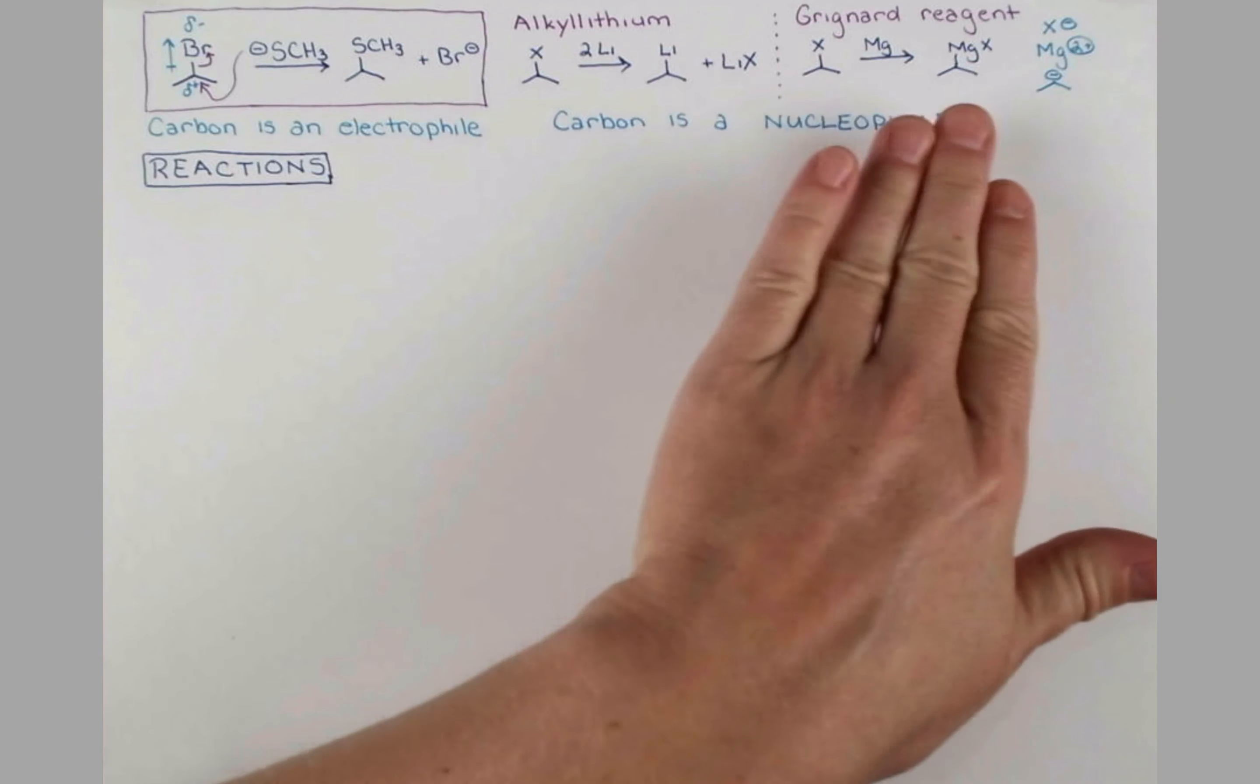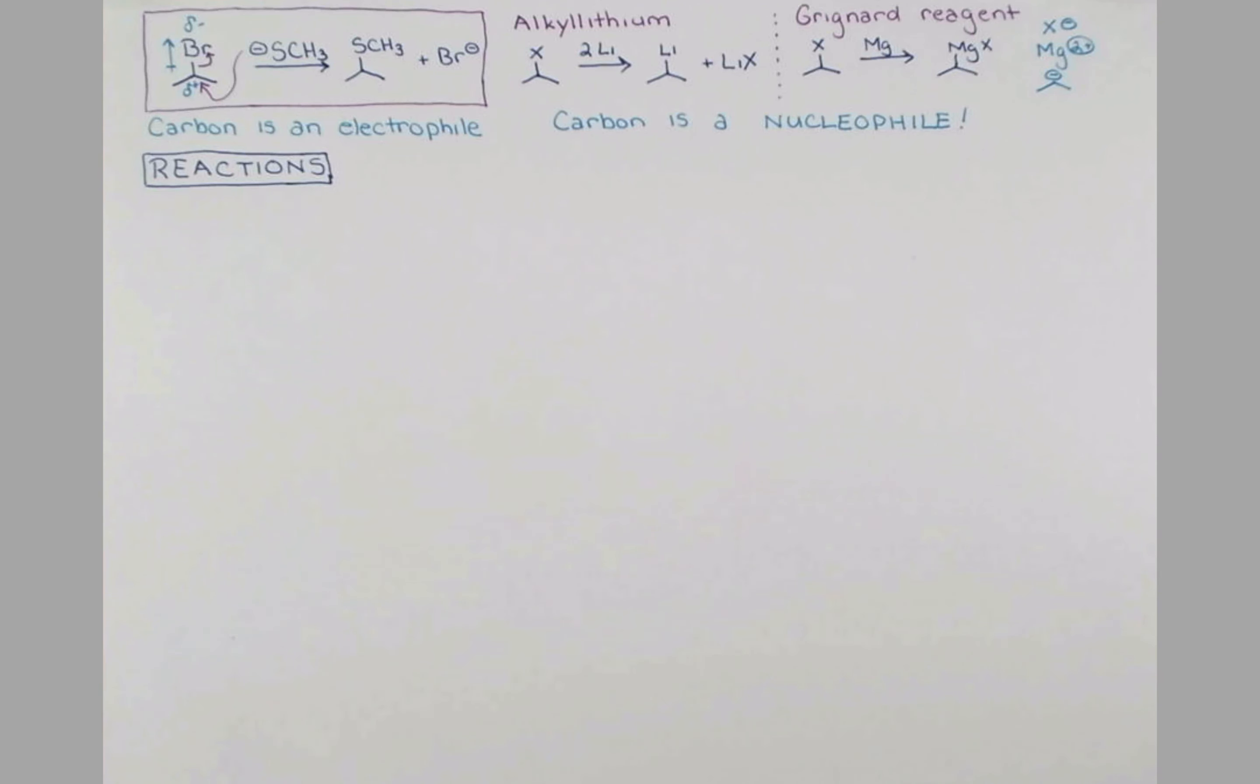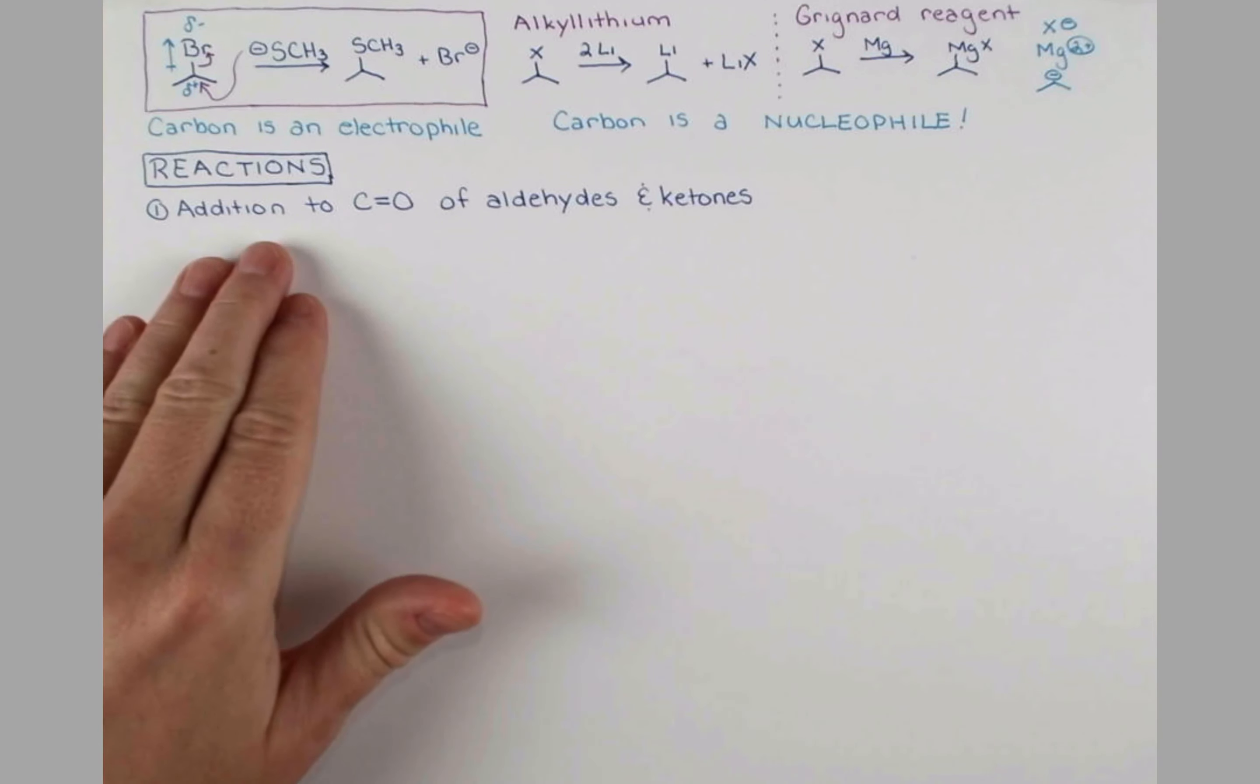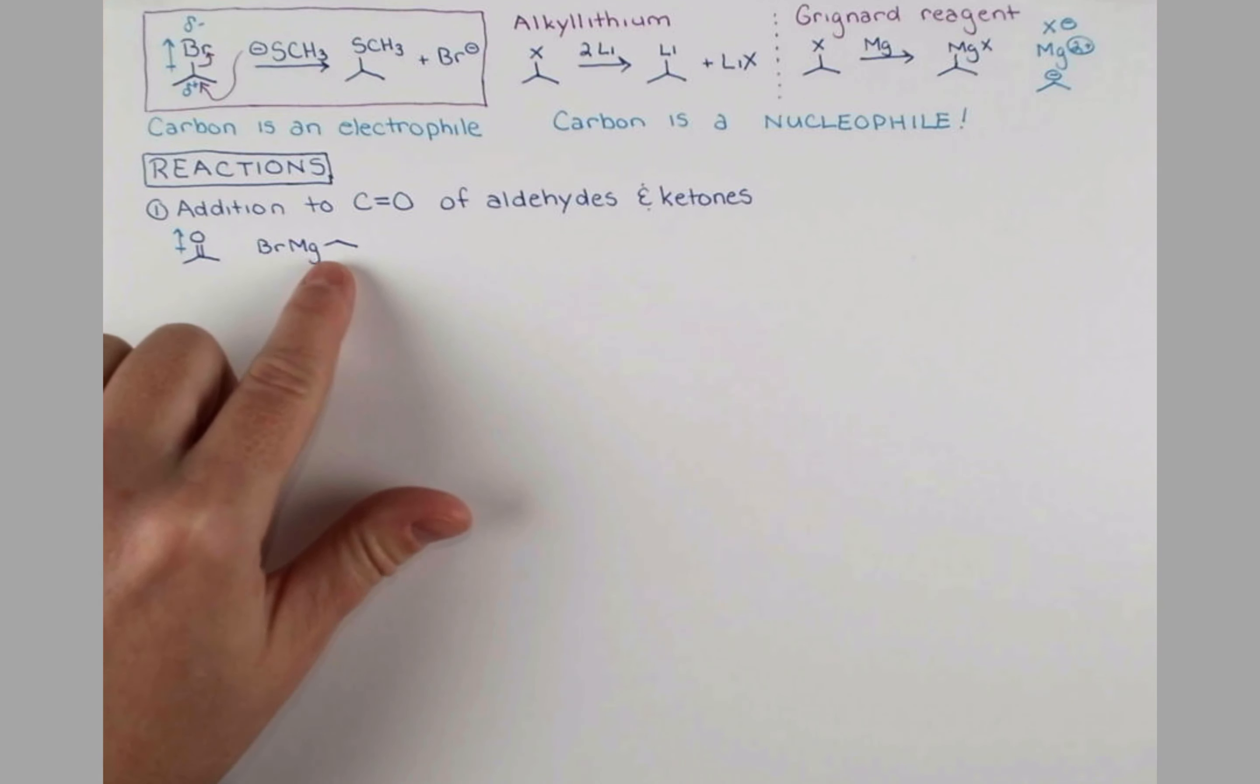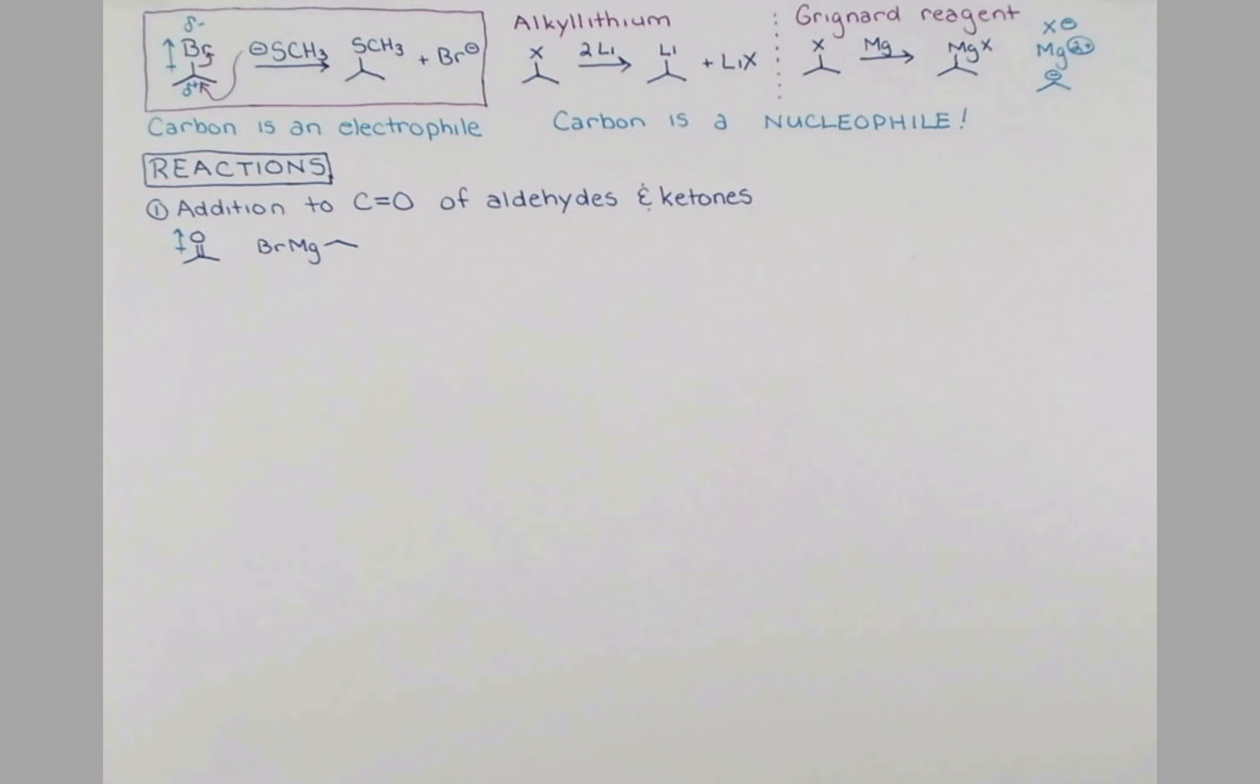Let's look at the reactions of alkyl lithium and Grignard reagents. They're very similar. The first reaction we'll look at is the addition to the carbonyl group of aldehydes and ketones. It's important that we're just considering aldehydes and ketones because some other carbonyl groups will behave differently. Let's start with acetone as our example. We'll react this with the Grignard reagent, ethyl magnesium bromide. Oxygen is more electronegative than carbon, so we have a dipole in this molecule.